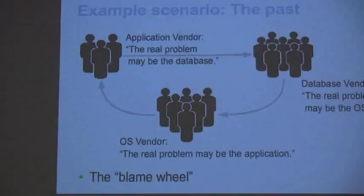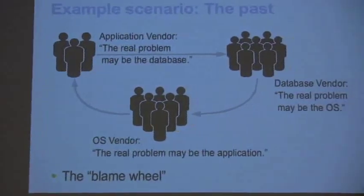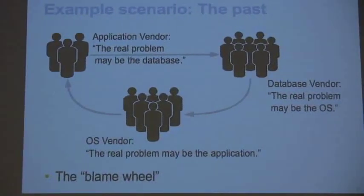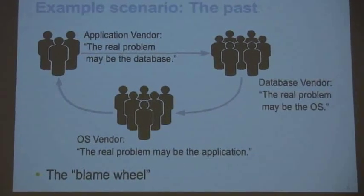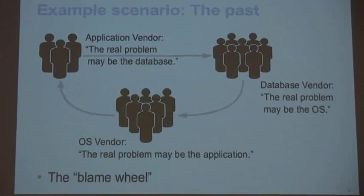The application vendor may respond and say the real problem is the database. The database vendor says the real problem may be the OS. The OS vendor says no, the real problem is the application. Anyone been in this blame wheel before? But the OS vendors and the database vendors all agree it's really the user's problem.